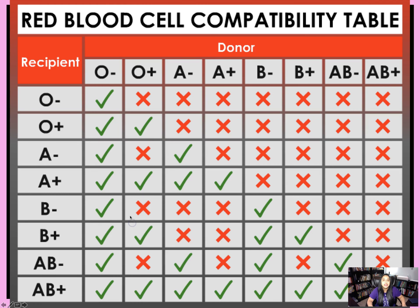Let's look at that a little bit more. This is just a red blood cell compatibility table that you can see. So we have O negative, O positive, A negative, A positive, and so on and so forth. Don't worry about the negative and positives for our situation right now — you'll learn more about this when you take another course in the future such as anatomy. Right now we're just focused on the genotypes and phenotypes of O, A, B, and AB.